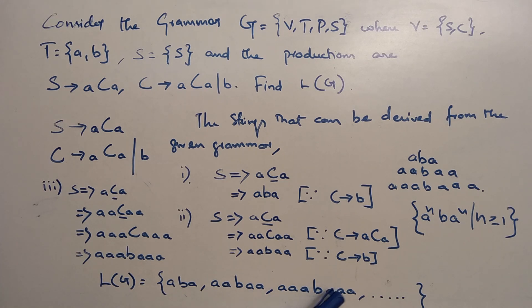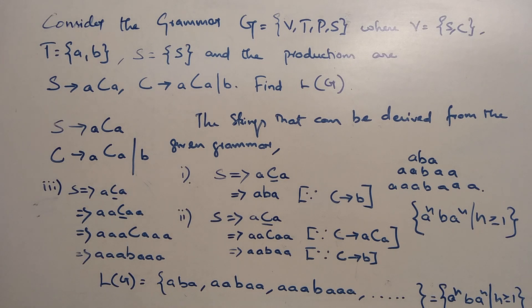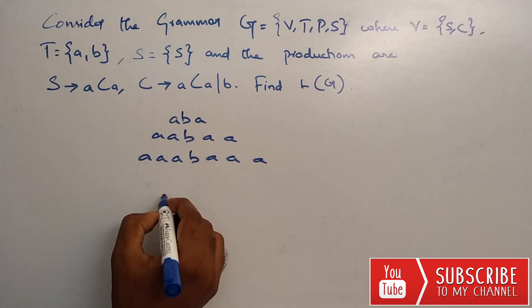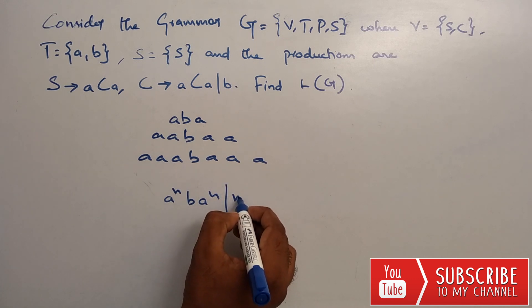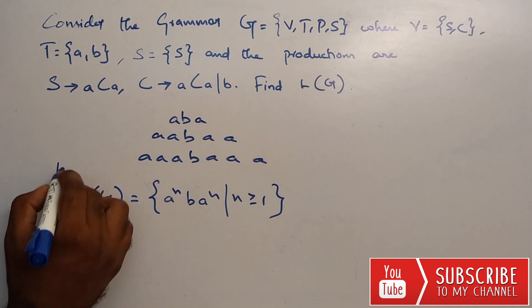This can be generally written as A power n, B, A power n, such that n greater than or equal to 1. So this is the language for the given grammar: L(G) = { aⁿ b aⁿ | n ≥ 1 }. This is our language belonging to the grammar.